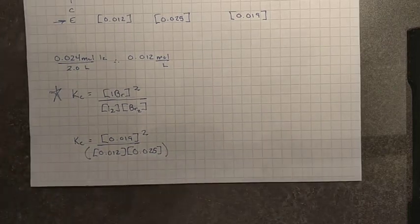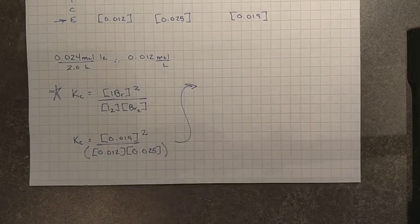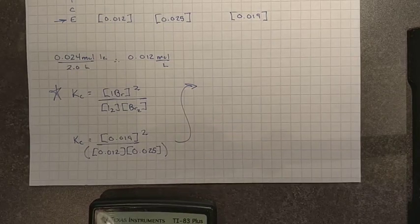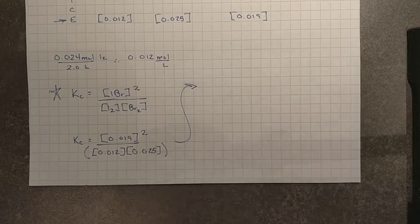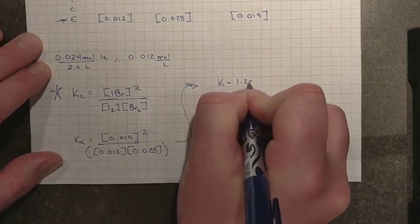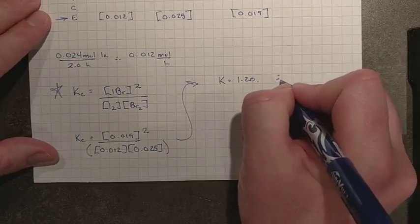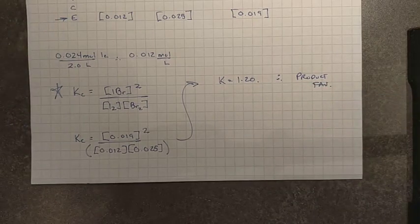Do this the right way. And it should work out. So, 0.019 squared, divided by all of 0.012 times 0.025, works out to a number of 1.20. So we can see this one is ever so slightly above the value of 1. Therefore, this should be product favored. There you go. That's number 2. I think we have enough time to squeeze in question 3B.